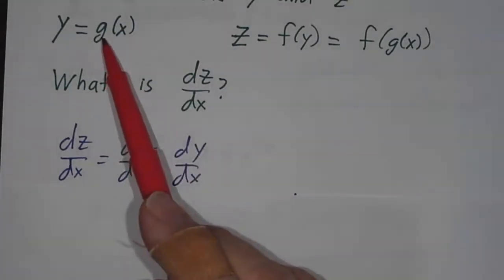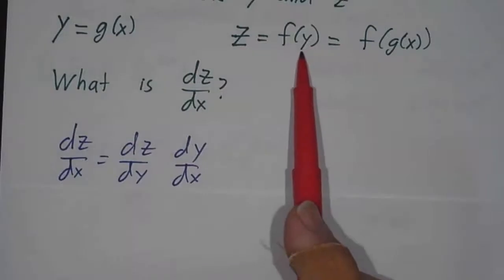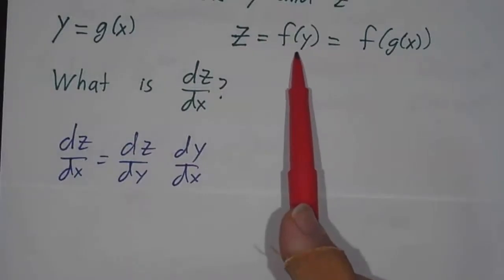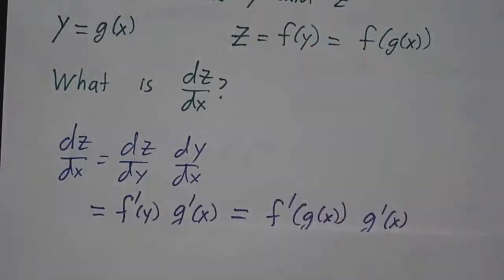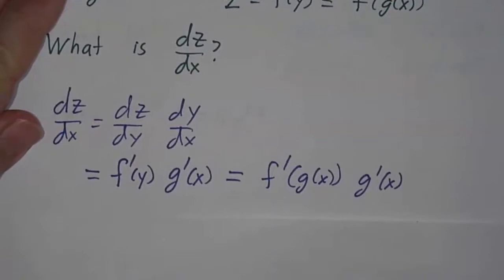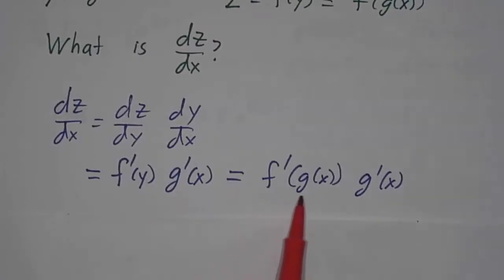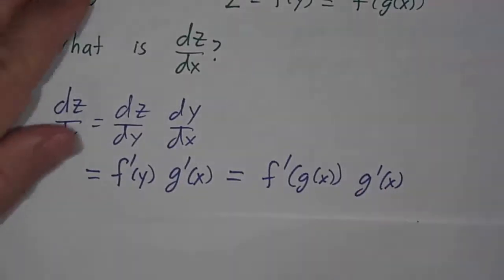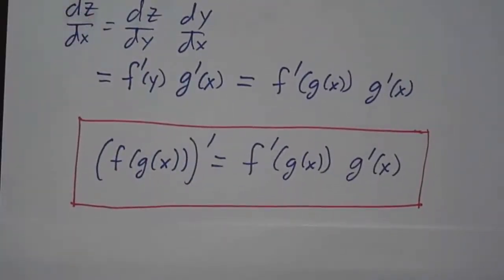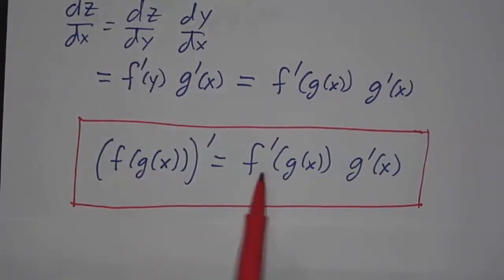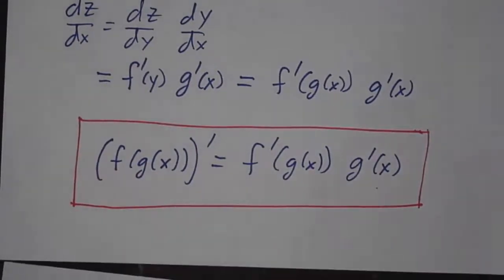dy/dx is just g prime, and dz/dy is just f prime of y. So this gives us f prime of y times g prime of x — not f prime of x, f prime of y. So that's f prime of g of x times g prime of x. And this then is Newton's form of the chain rule: the derivative of f of g of x is f prime of g of x times g prime of x.